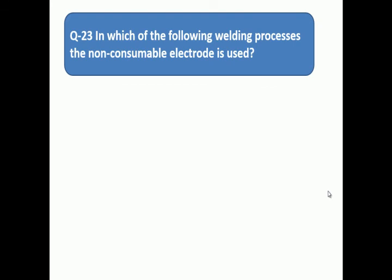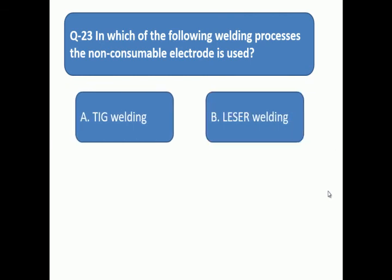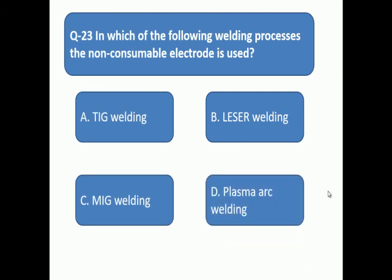Question number 23: In which of the following welding process, the non-consumable electrode is used? In which welding process is non-consumable electrode used? A: TIG welding, B: laser welding, C: MIG welding, D: plasma arc welding.